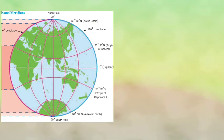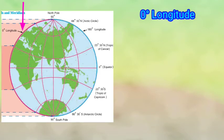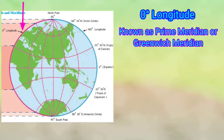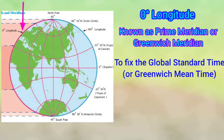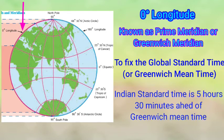Now I will introduce some important meridians of longitude. Number one: the zero degree longitude, also known as the Prime Meridian or Greenwich Meridian. It is used to fix the Global Standard Time, or Greenwich Mean Time (GMT). This time is used to coordinate the standard time of other countries. For example, Indian Standard Time is 5 hours 30 minutes ahead of Greenwich Mean Time.